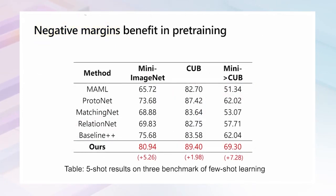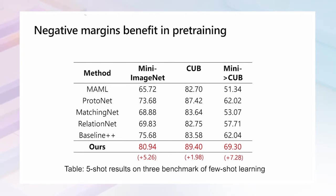On three benchmarks of few-shot learning, we achieved significant improvements over previous best approaches: about 5 points on Mini ImageNet, about 2 points on CUB, and about 7 points on Mini ImageNet to CUB.